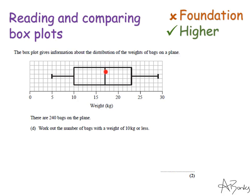Now the median represents where 50% of the bags are. So the median is the middle. The upper quartile is our three quarter mark. And our lower quartile is our quarter mark. So the lower quartile is telling me that a quarter of the bags weigh 10 kilograms or less. So I've just got to work out what one quarter of 240 is. So I'm going to divide by four.